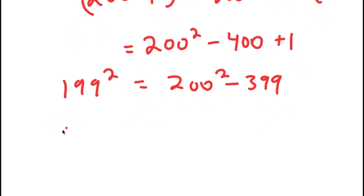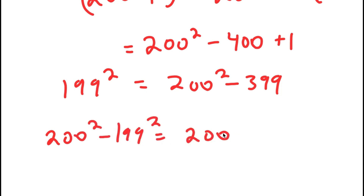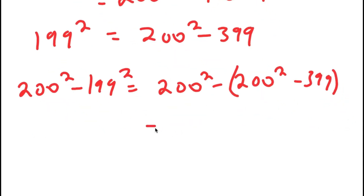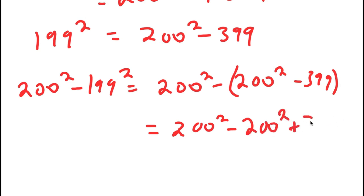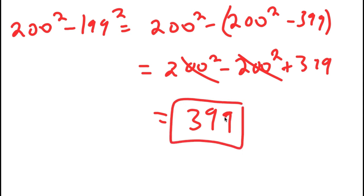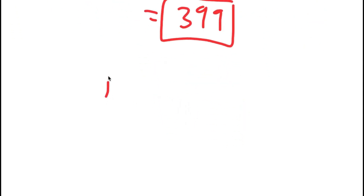So 200 squared minus 199 squared is going to equal 200 squared minus the quantity 200 squared minus 399, which is equal to 200 squared minus 200 squared plus 399. These two cancel out, and I'm left with 399. That is my second method.